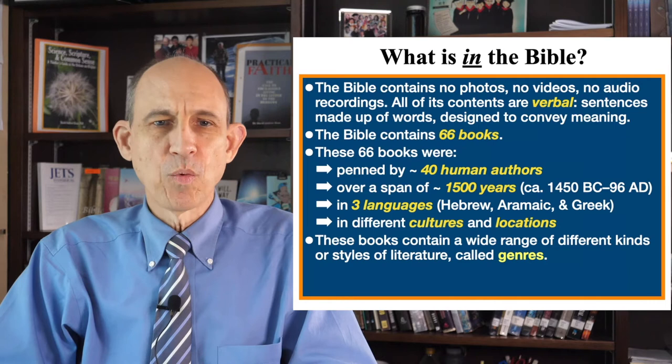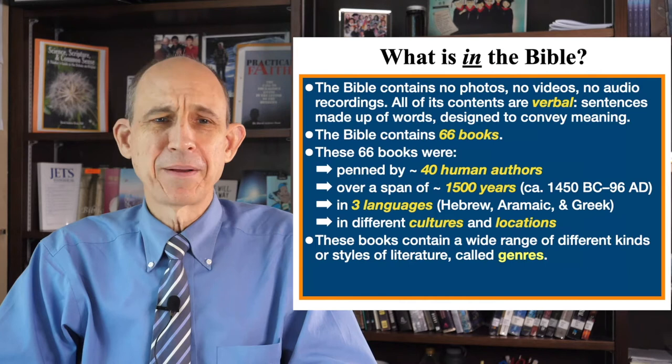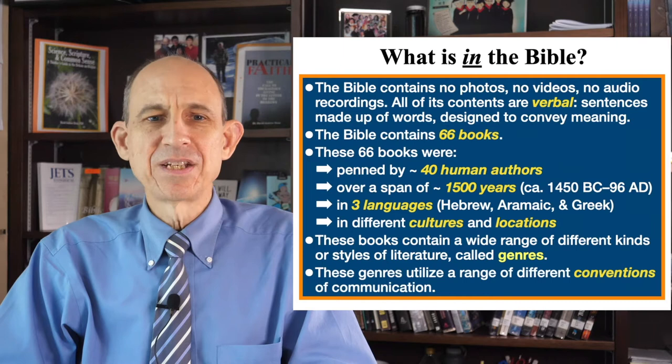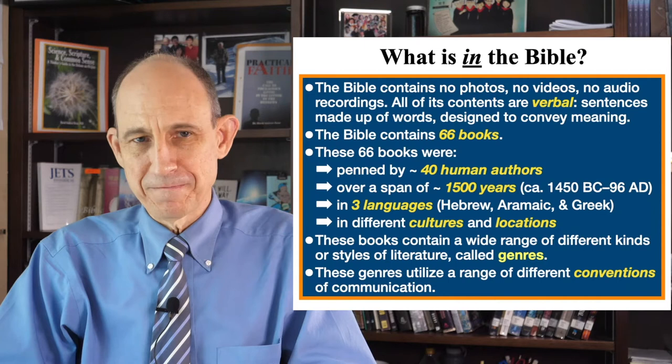The Bible was written in different cultures, composed in different locations and in different times. The books of the Bible contain a wide range of different kinds or styles of literature — the technical name for these styles is genre. The Bible contains many different genres, which we'll be talking about as we go through the course. These genres utilize a range of different conventions of communication.